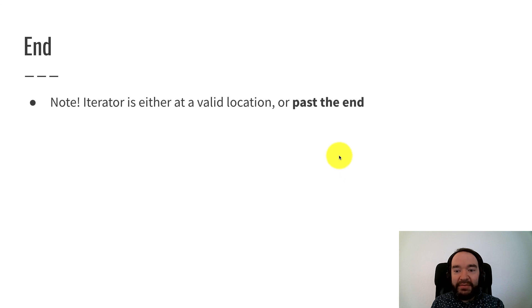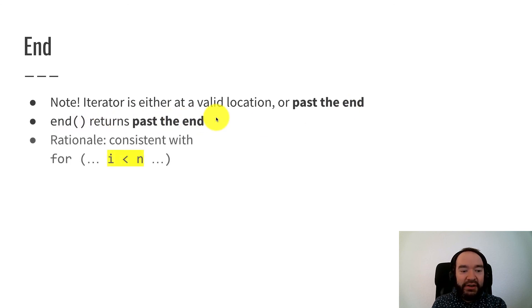Okay, one final note on this concept of the end. It's an important concept and causes a lot of miscommunications or misconceptions. So note that an iterator object is either at a valid location or past the end. There's two states an iterator can be in. It can be a valid location, you know, 2, 7, those actual elements of the array, or it can be in this past the end location.